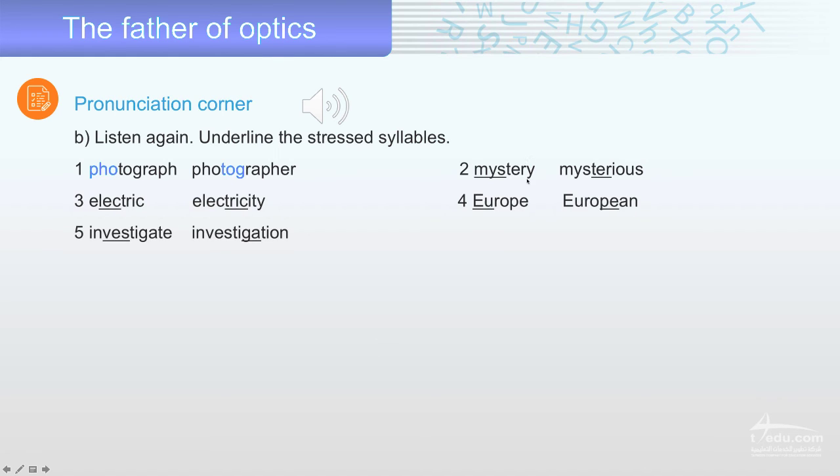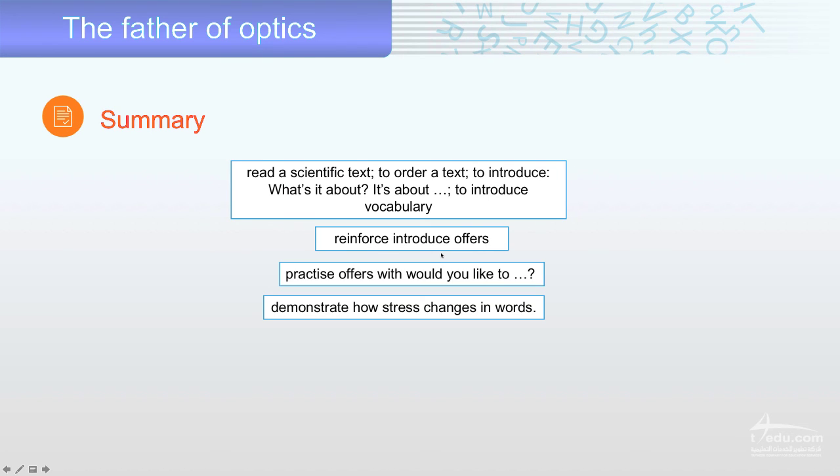Number two is mystery. Here's the syllable. What's the stressed syllable? Mystery. Here. Stears. Number three electric. Recipe. Four Europe, European. Five investigate, investigation. These are the stressed syllables.